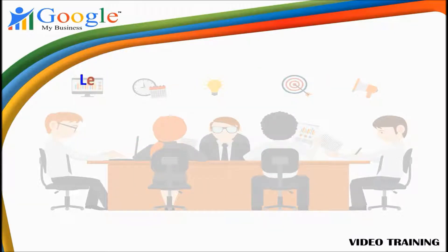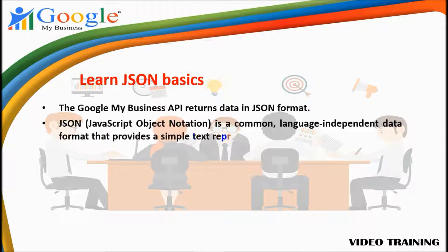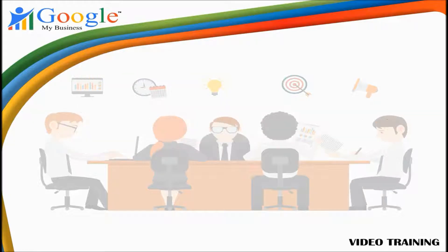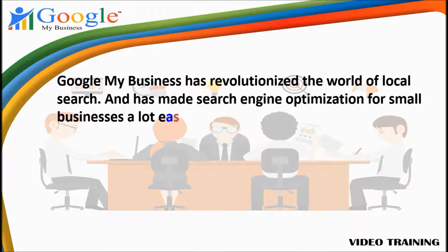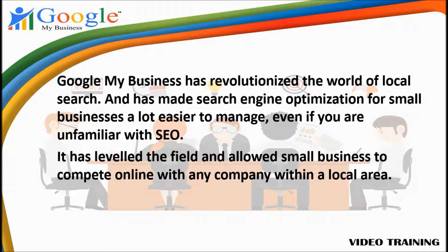The Google My Business API returns data in JSON format. JSON, or JavaScript Object Notation, is a common, language-independent data format that provides a simple text representation of arbitrary data structures. For more information, see json.org. Google My Business has revolutionized the world of local search and has made search engine optimization for small businesses a lot easier to manage. Even if you are unfamiliar with SEO, it has leveled the field and allowed small businesses to compete online with any company within a local area.